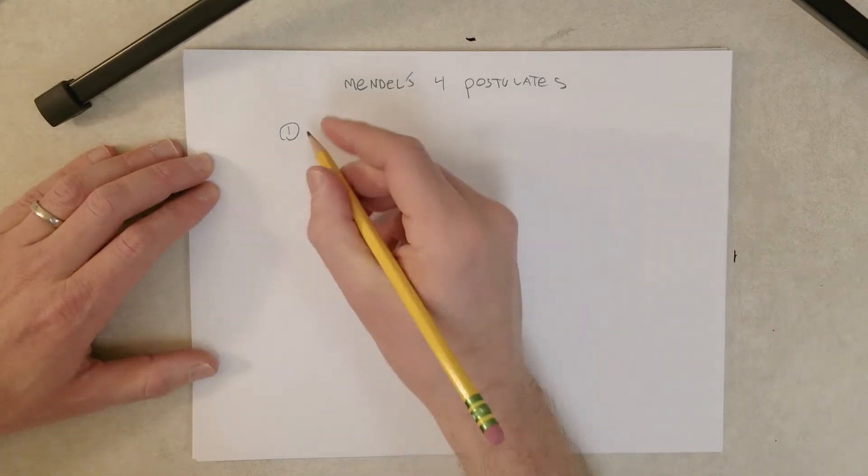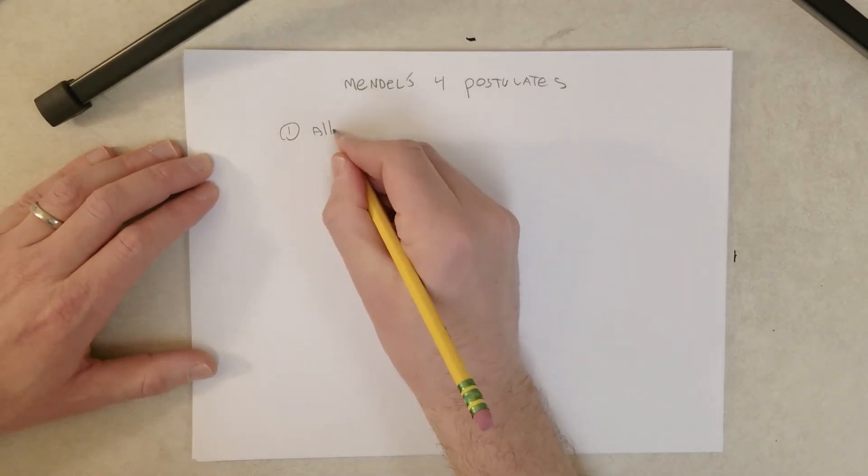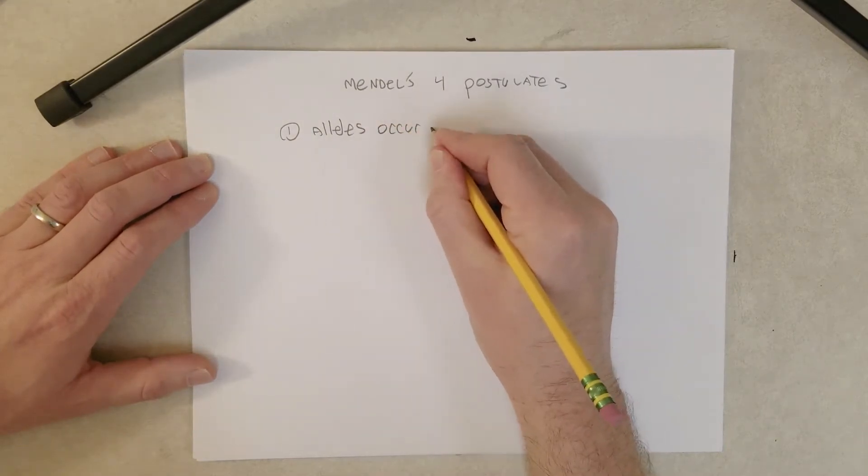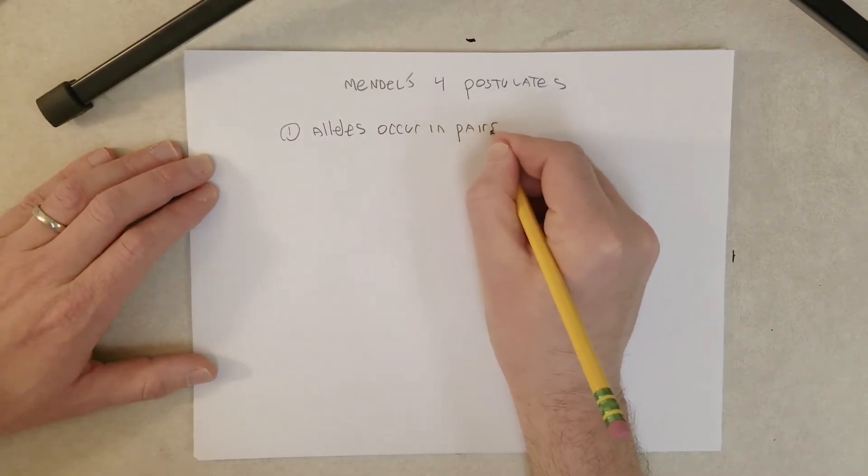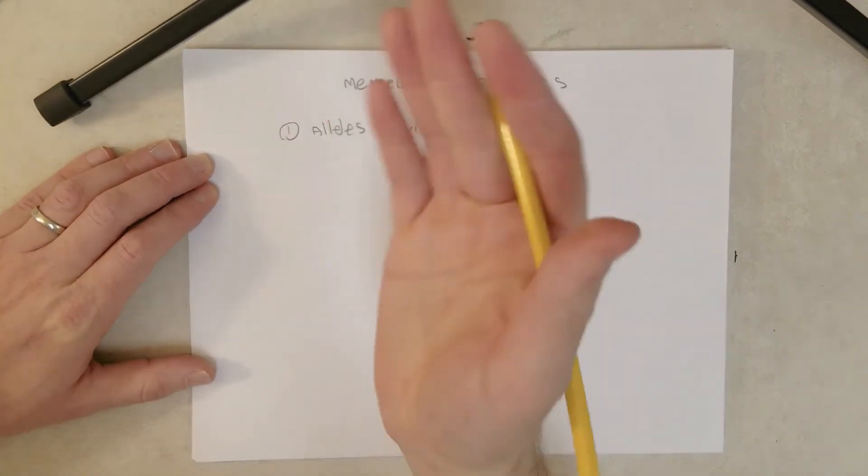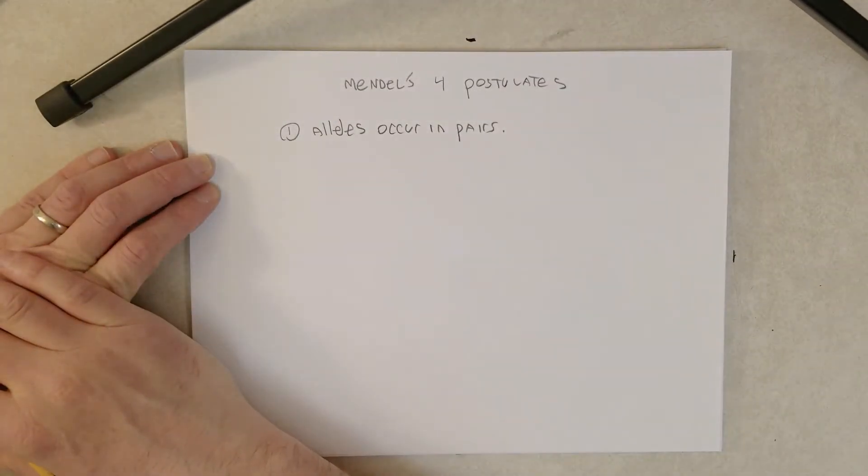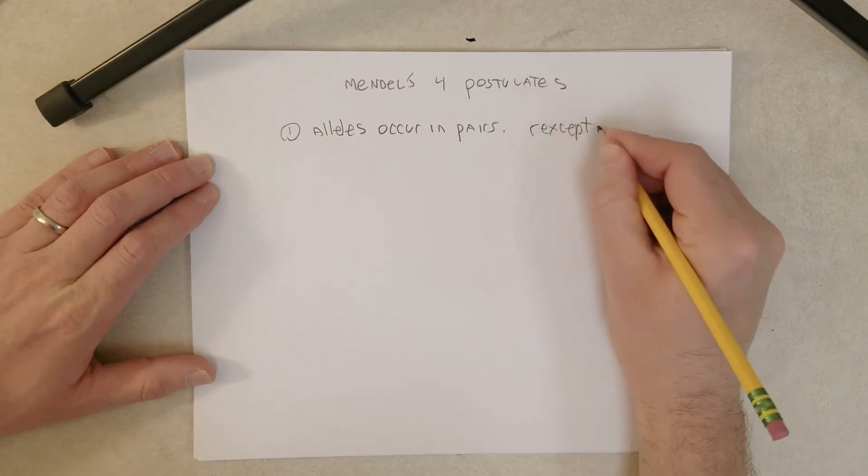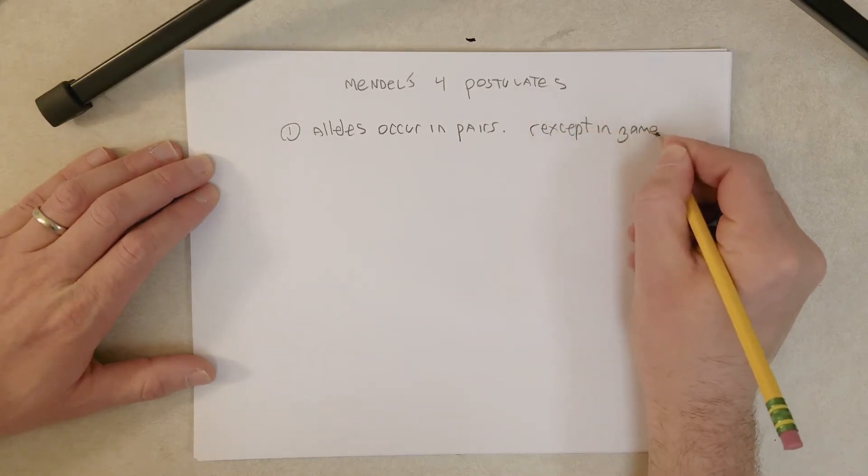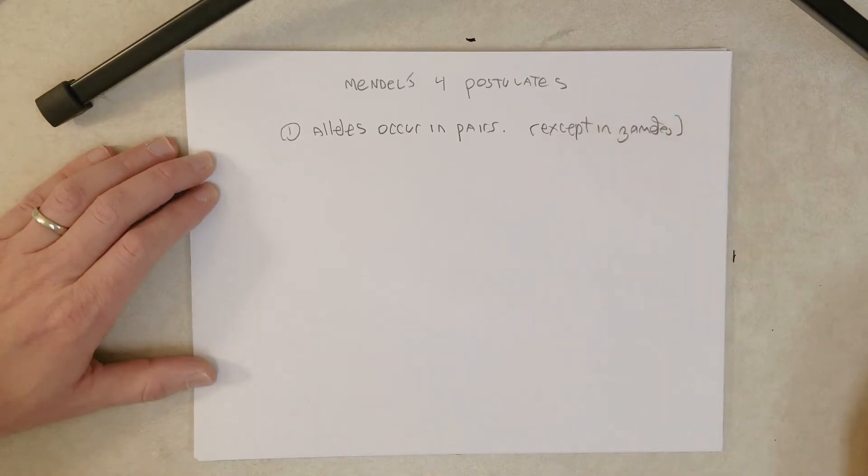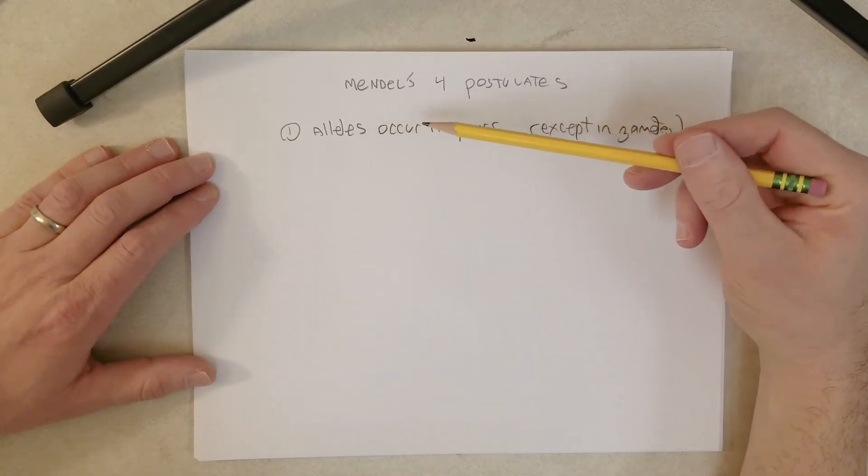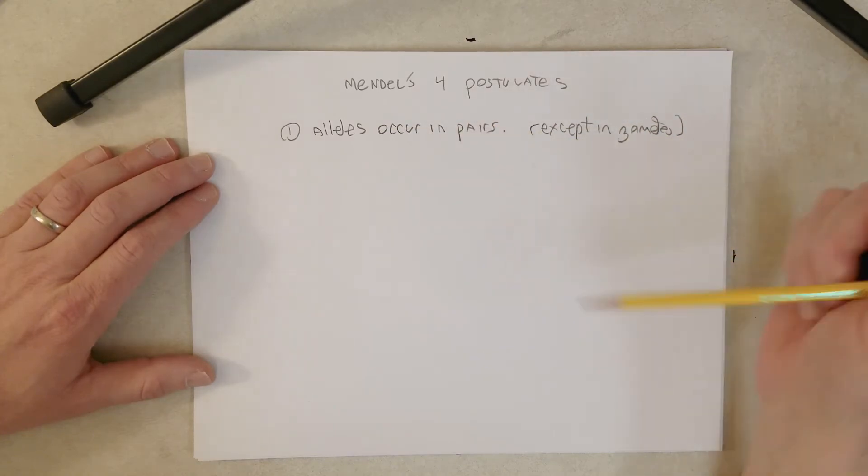And these four postulates are alleles occur in pairs. So alleles for character occur in pairs, except in gametes, right? And we're talking about pea here. P is diploid, right? So that makes sense that the alleles would occur in pairs in most cells, except the gametes.